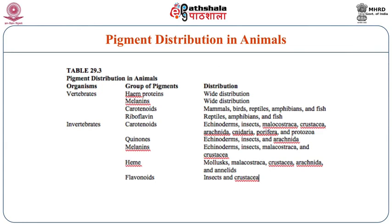Let us look at pigment distribution in animals as per the vertebrate and invertebrate classification. In vertebrate organisms, the group of pigments includes heme proteins, melanins, carotenoids, and riboflavin. Heme proteins and melanins are very widely distributed. Carotenoids are present in mammals, birds, reptiles, amphibians, and fish. Riboflavin is present in reptiles, amphibians, and fish. In invertebrate organisms, the group of pigments includes carotenoids, quinones, melanins, heme, and flavonoids.